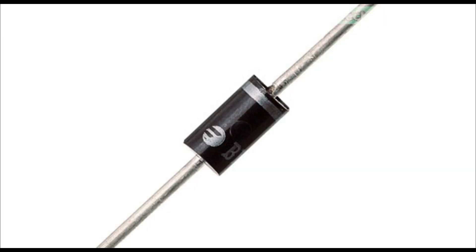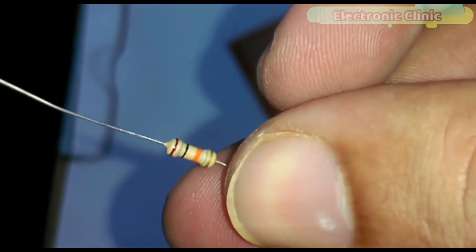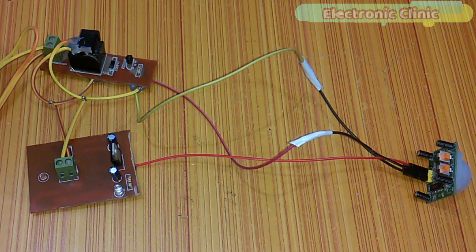Number 10 1N4007 diode and finally number 11 a 10k resistor. These components can be purchased from Amazon and Ali Express. The components purchase links are given in the description.